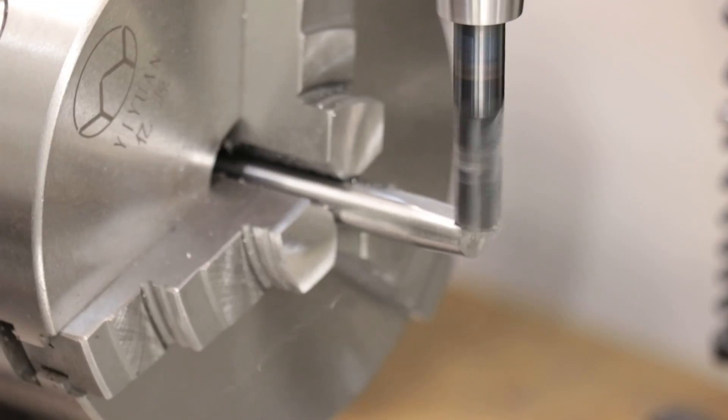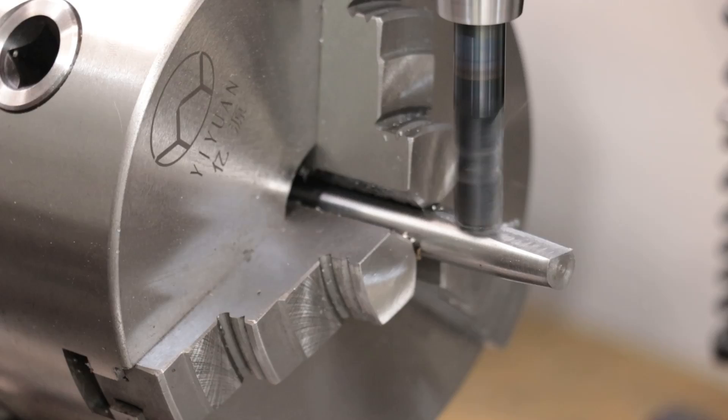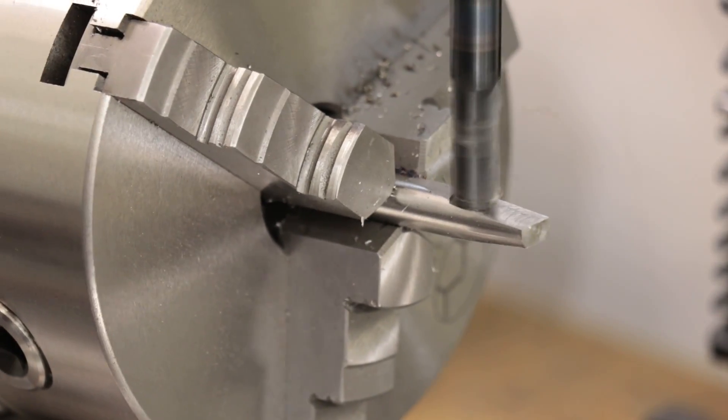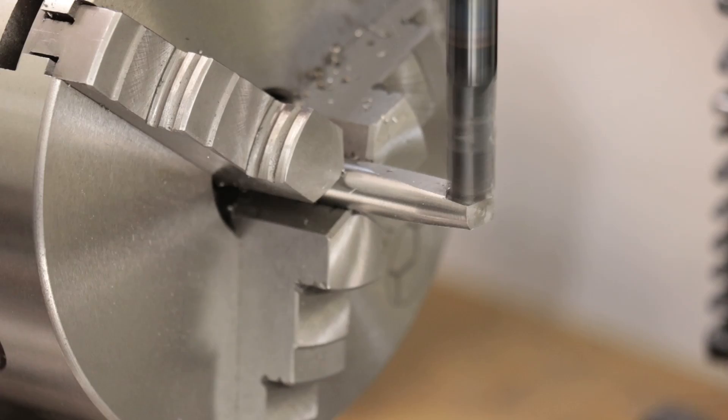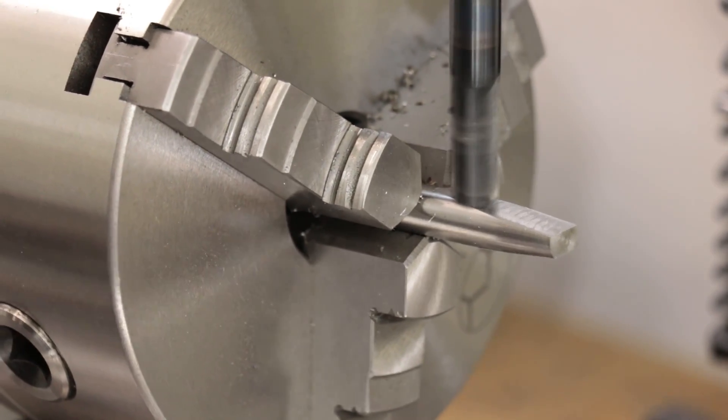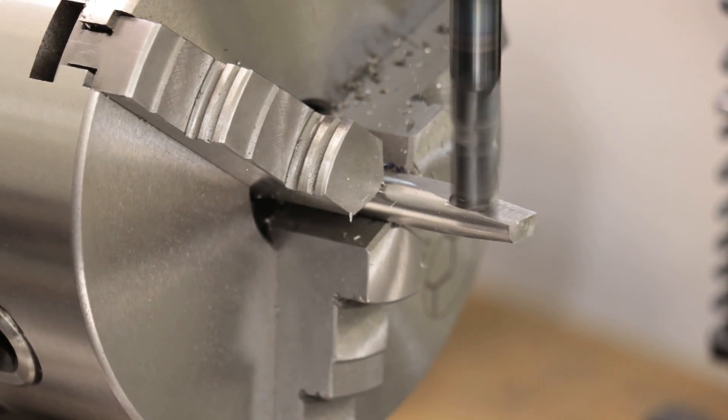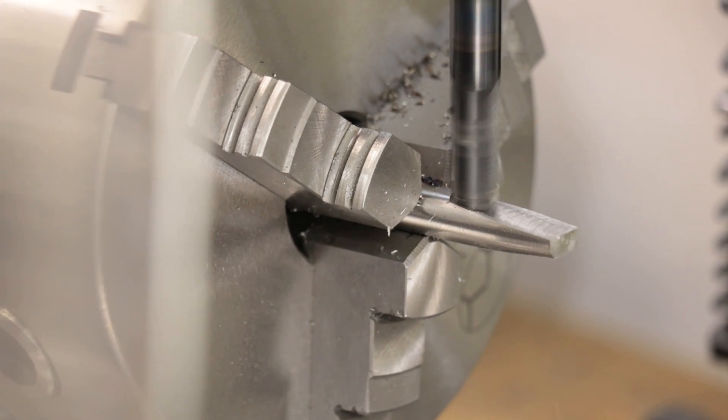And with that done I can now start to machine the flat blade. I'm going with the flat blade simply because it's the easiest type of screw that I can easily make in the workshop with the lathe, the milling machine and a slitting saw.